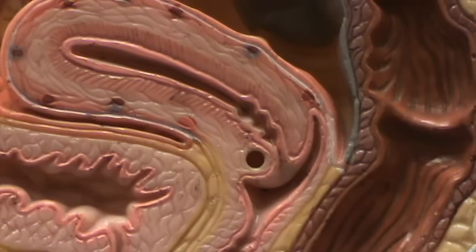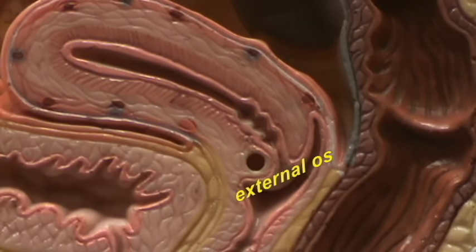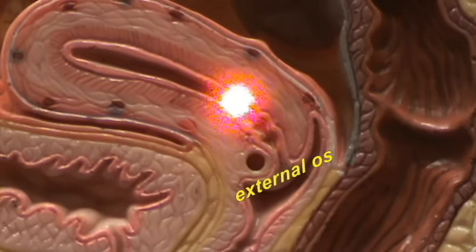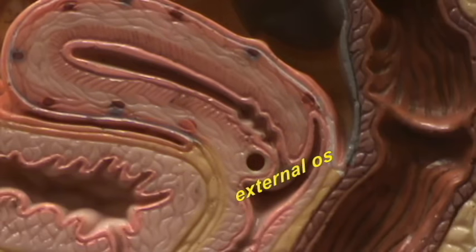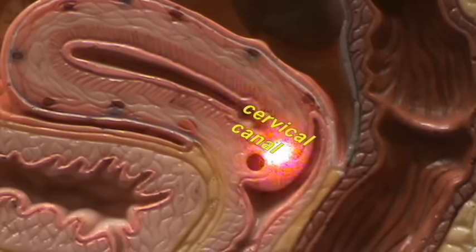You can see that the passageway through the cervix has an external opening, referred to as the external os, and an internal opening, referred to as the internal os. This would then be the cervical canal in between those two openings.